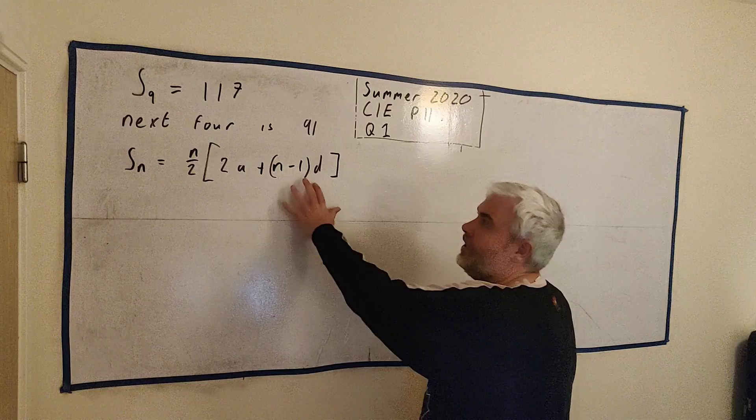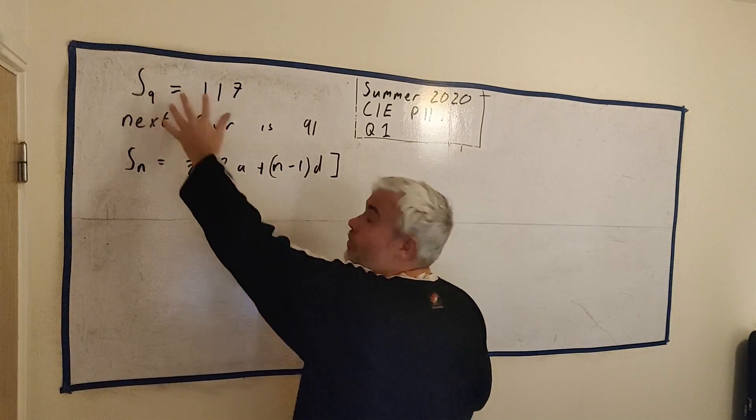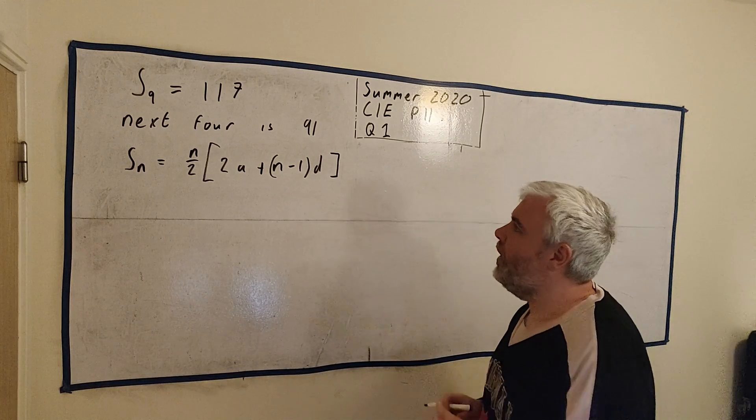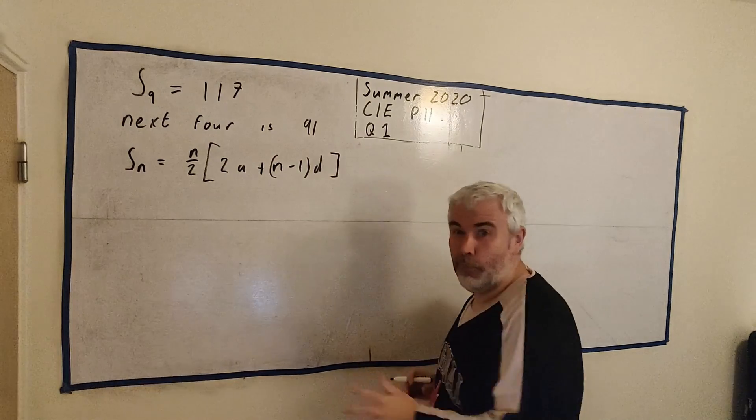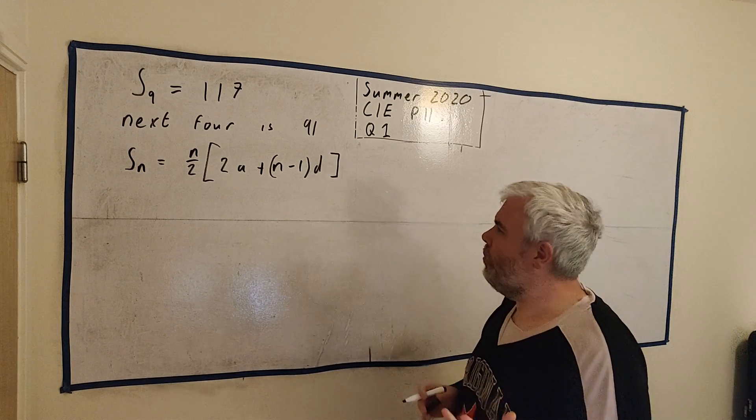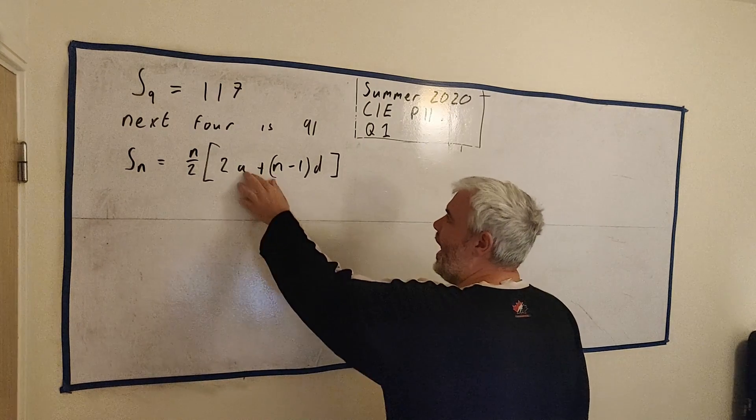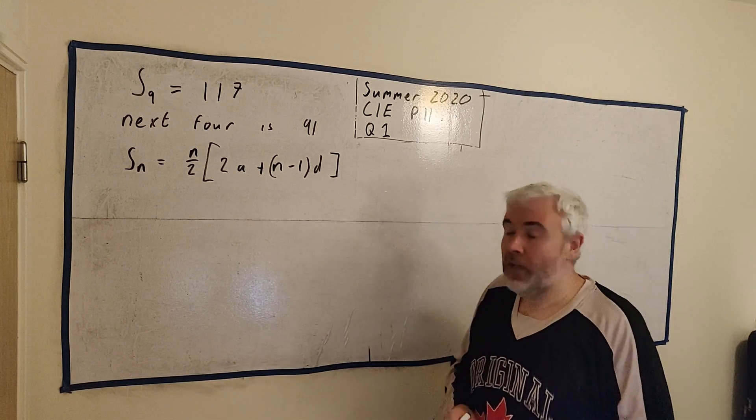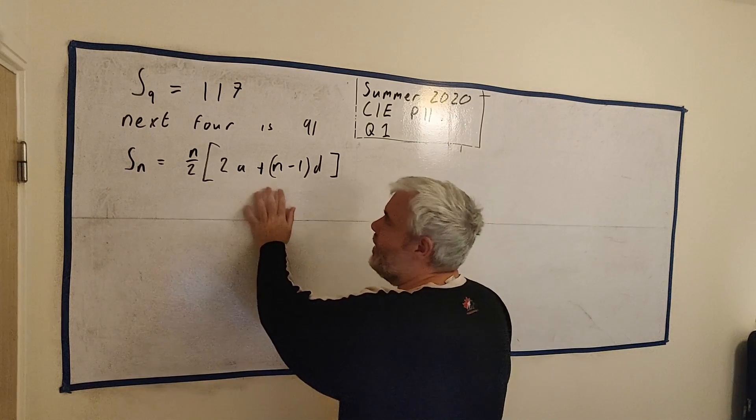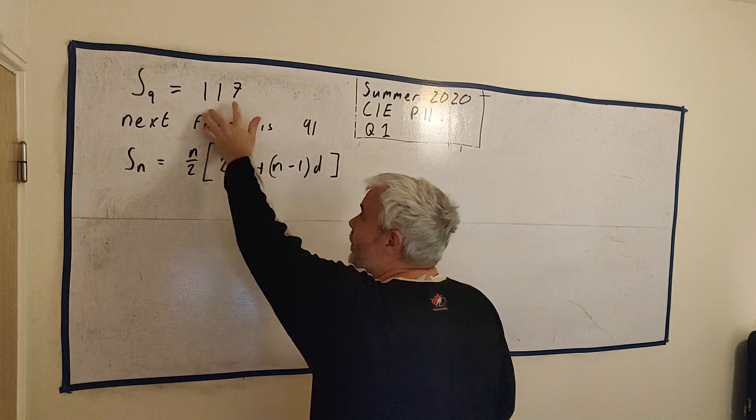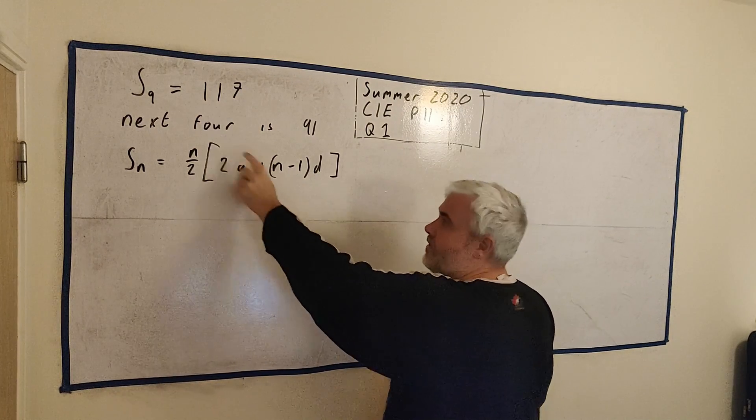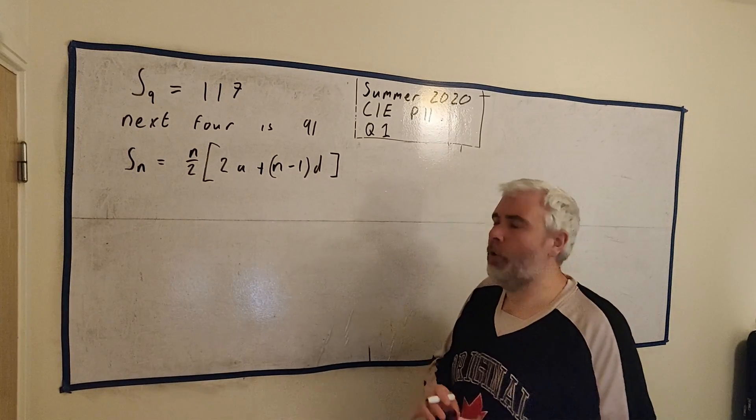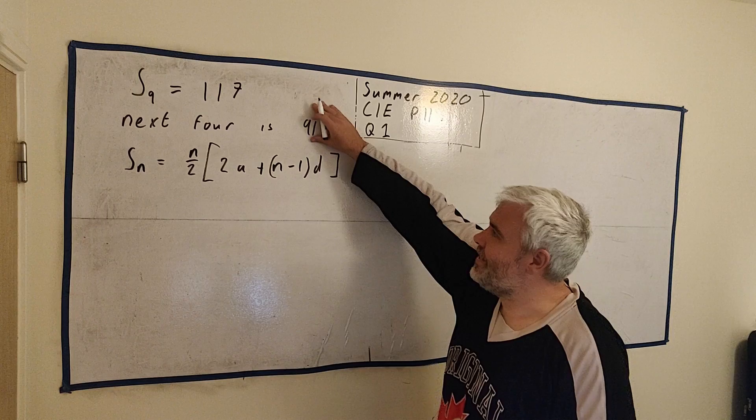So this is something we know. Using this, I can actually turn this into an equation. But before we get to that, I need a way to write this 91. I need to get that involved in the answer. Because what they're looking for ultimately is a and d, the first term and the common difference. We're going to use this formula equal it to 117. n is 9, and we're left with just a and d.